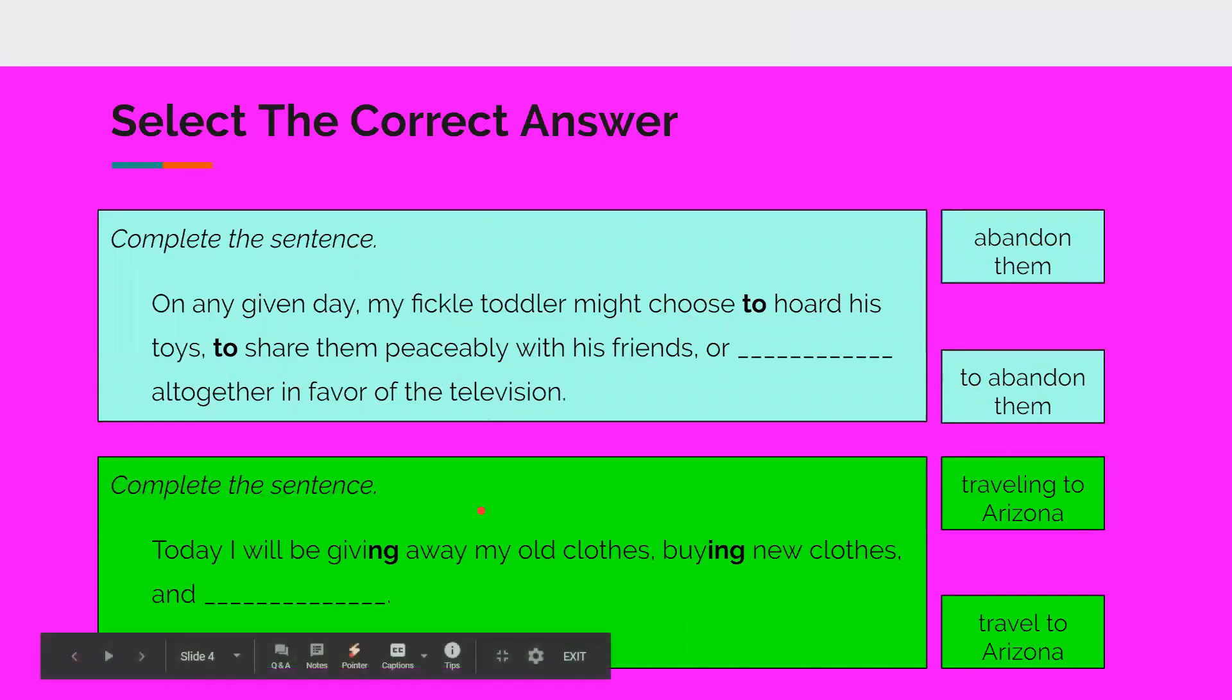The next one we have is complete the sentence. Today I will be giving away my old clothes, buying new clothes, and blank. So we see the -ing here again. So would it be traveling to Arizona or travel to Arizona? Obviously it would be traveling to Arizona because of the -ing.